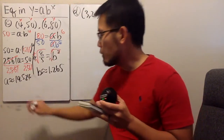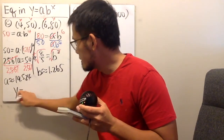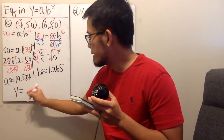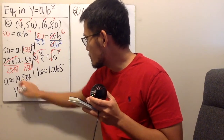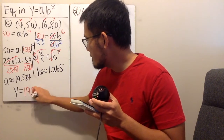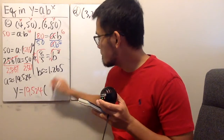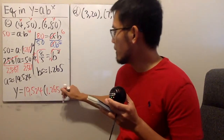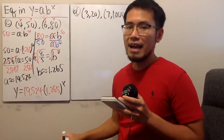And lastly, we write y equals 19.524 times 1.265 raised to the x power. That's it.